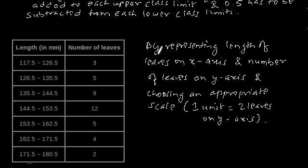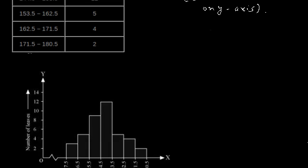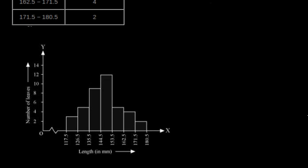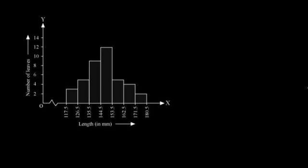So by considering this, the histogram of this information can be drawn like this. This is our required histogram where the length of leaves is on x-axis and the number of leaves is on y-axis with the scale of two leaves per unit on y-axis.